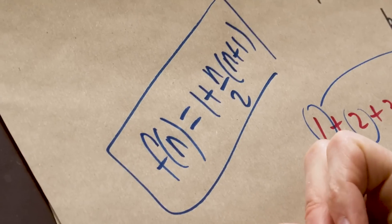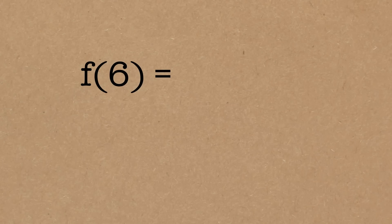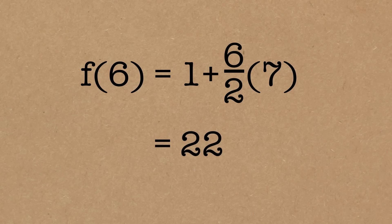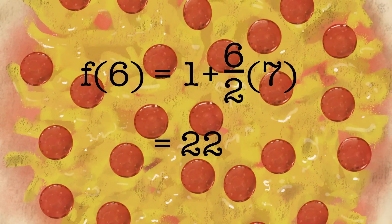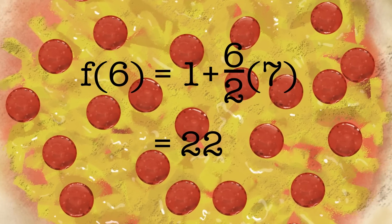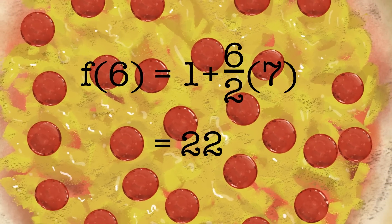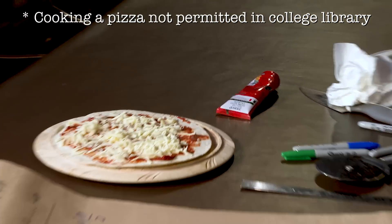That's the formula. So if I want to do 6 cuts — which is what I'm going to try and do with the pizza — it's 1 plus 6 over 2 times 7, which is going to be 22. We had it in the table, but we can see it from our formula as well. So in theory, I should be able to cut this pizza with only 6 straight cuts and get 22 pieces of delicious, delightful, tortilla pizza bread cheese tomato thing.